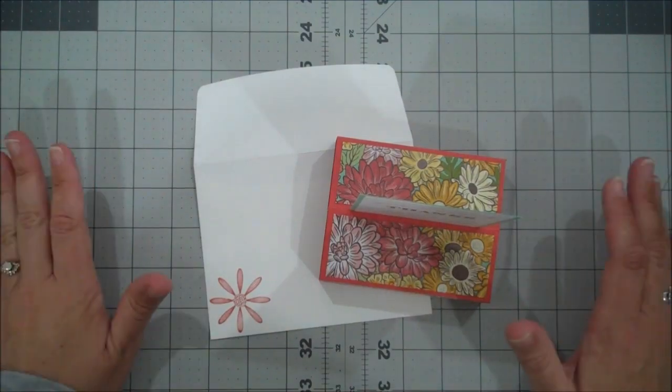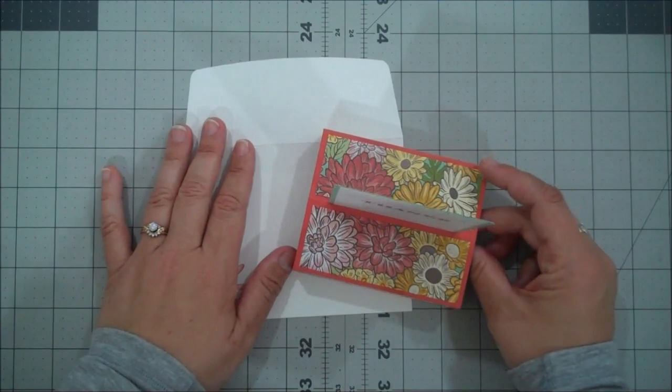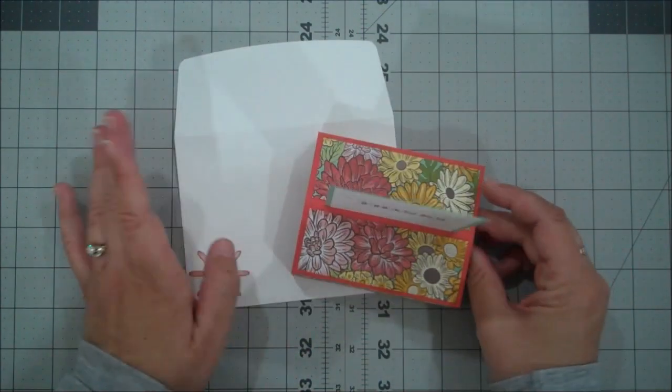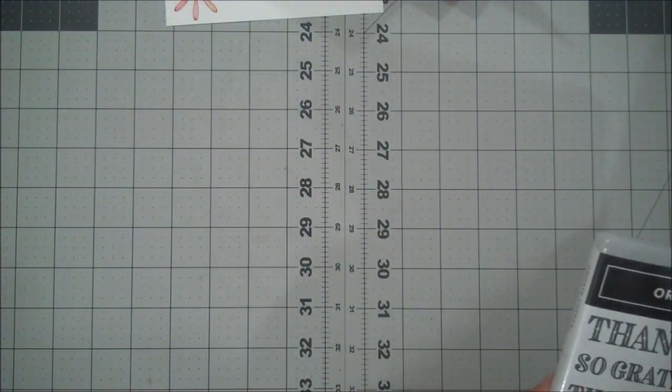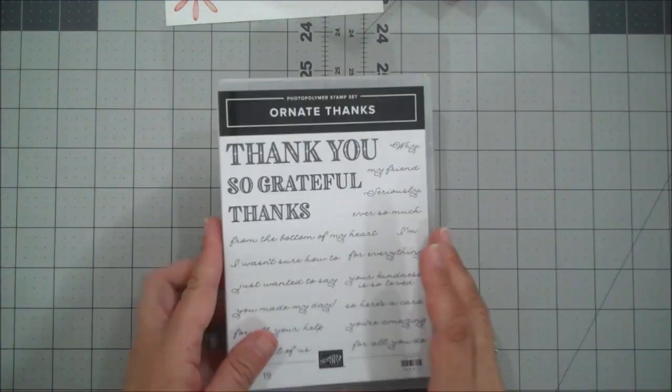We are going to be using the Ornate Garden Suite. This suite is available this month. It will be coming out in our new catalog in June but you can get it now. So let me show you some of those beautiful products that come with it. It's a huge suite but you can order the different bundles and products individually however you'd like.